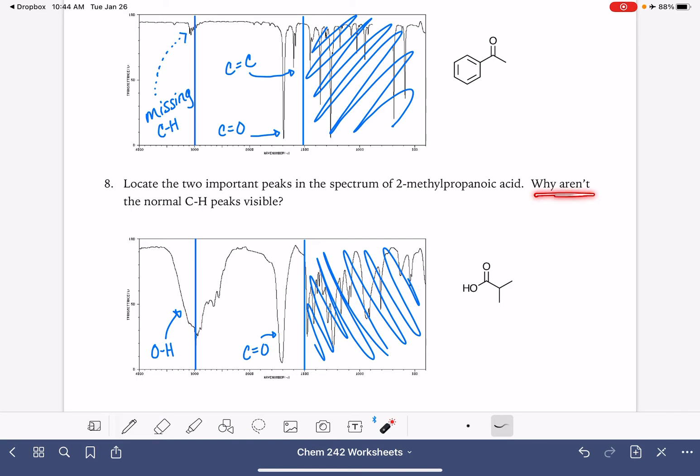And this asks us why aren't the normal CH peaks visible? Where are they? They are there in the spectrum, but they are overshadowed by the OH peak so that you can kind of see the end of the CH peaks right here. So they're just kind of buried inside this peak. And that's why we can't see it. It makes it look like they're not there, but they actually are there. It is possible for the OH peak if it came down further to just completely hide the CH peaks entirely. But we just know that they're present in the molecule because they all have carbon hydrogen bonds.